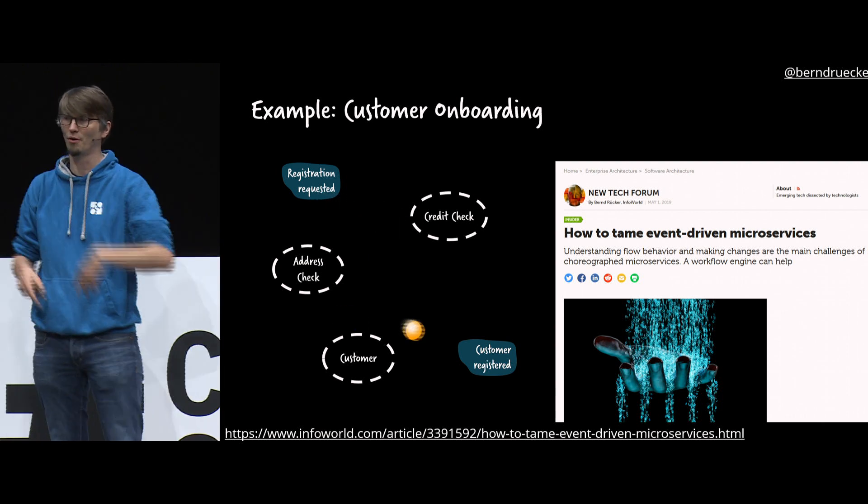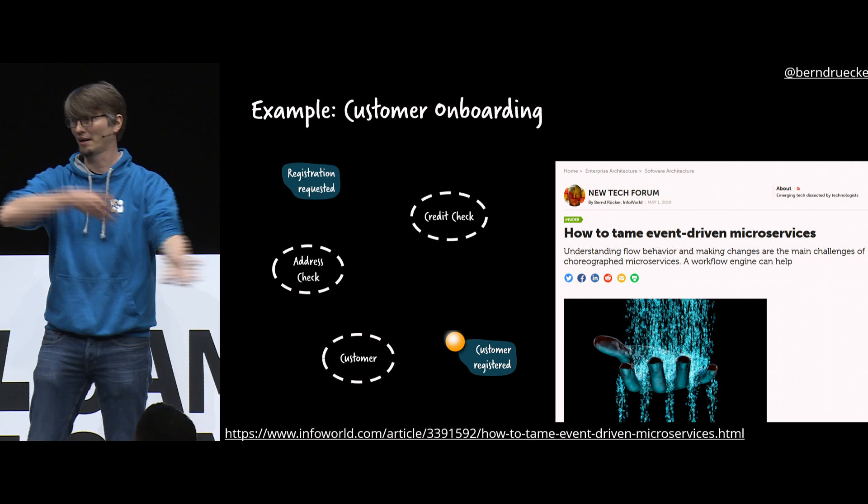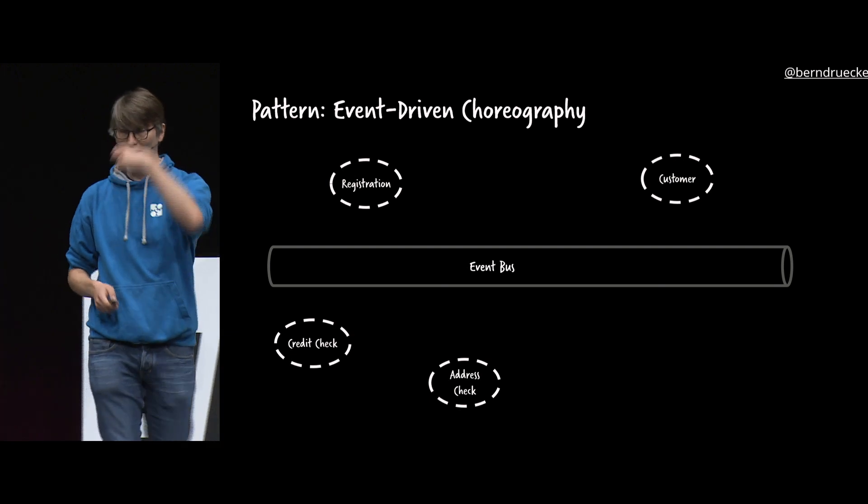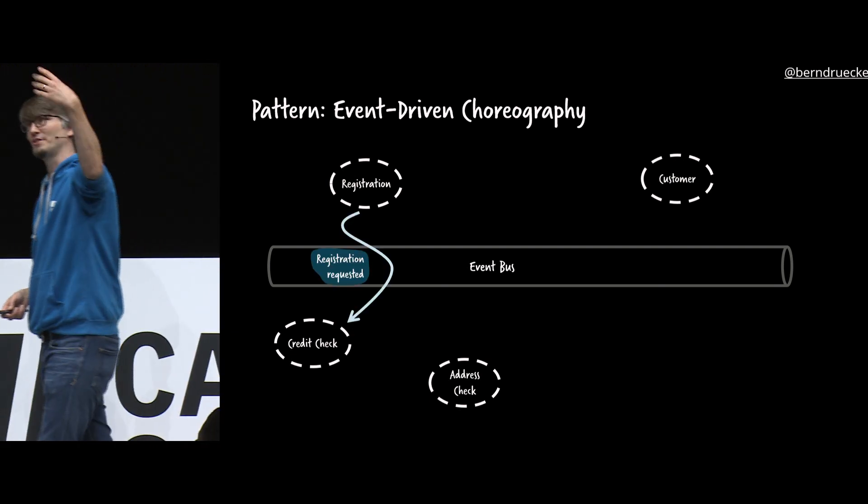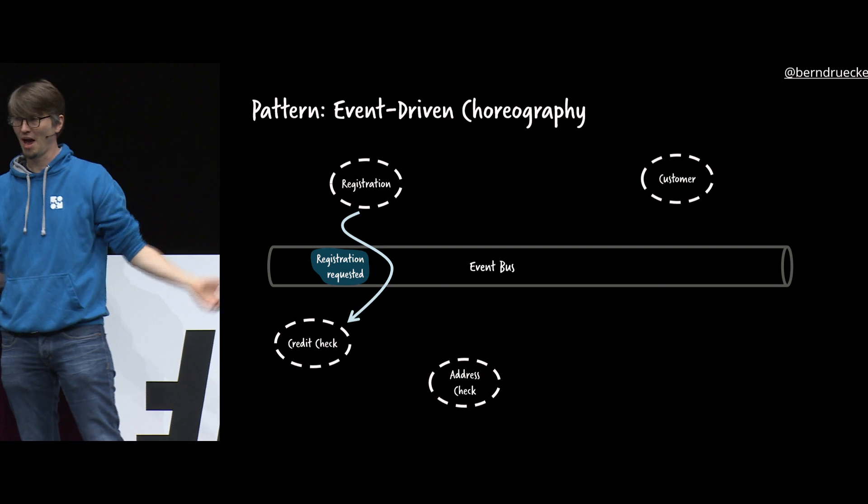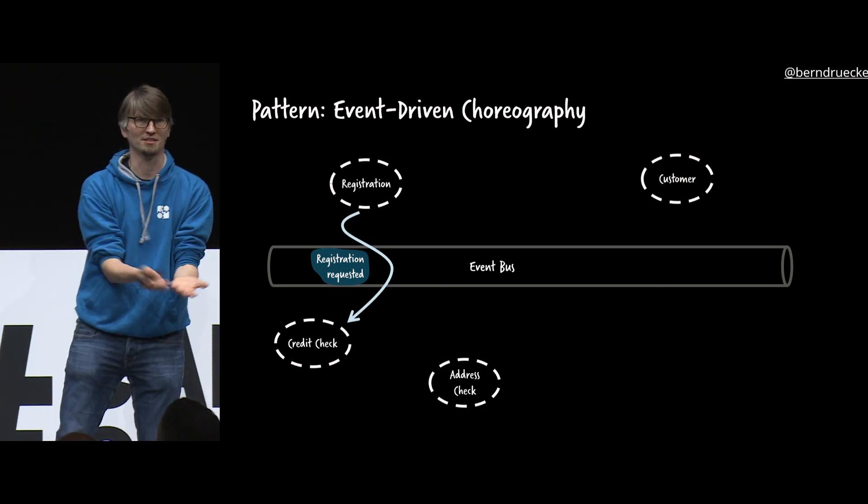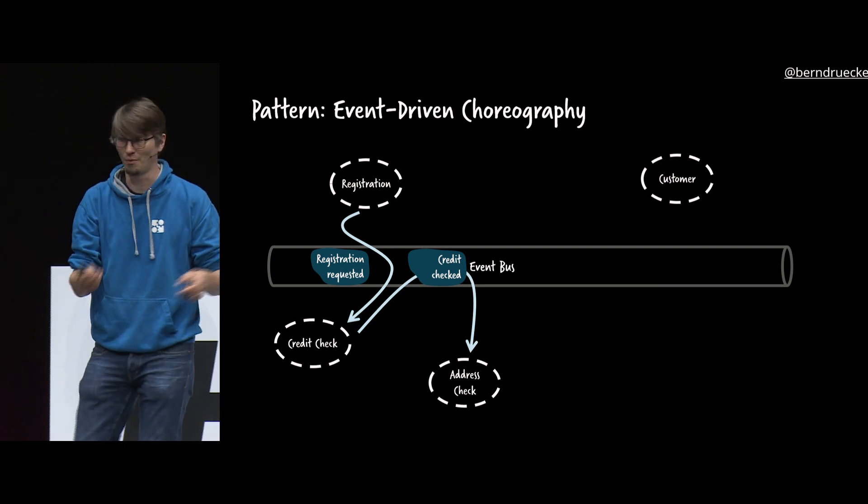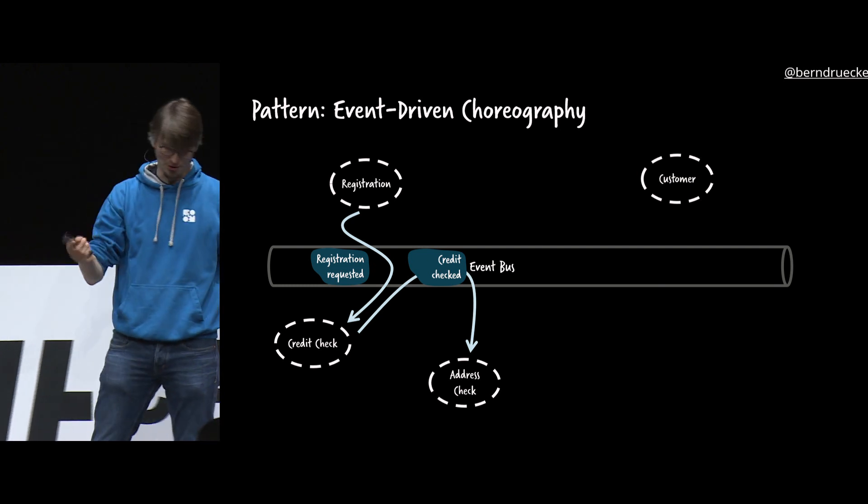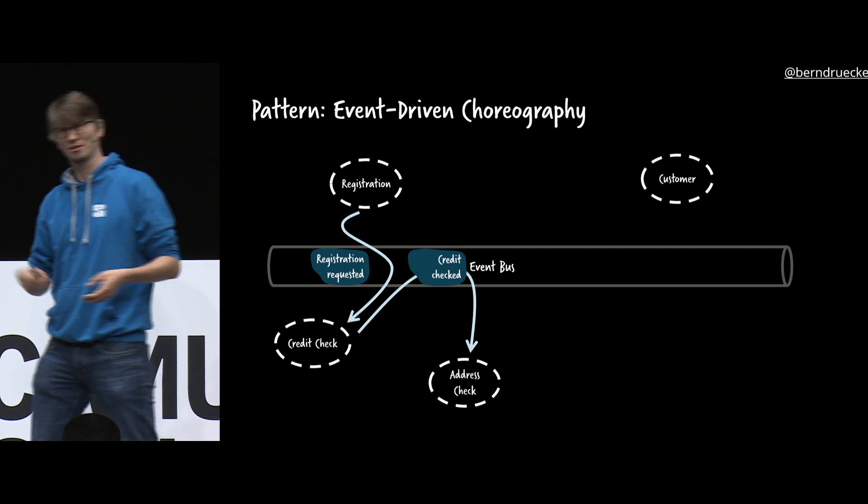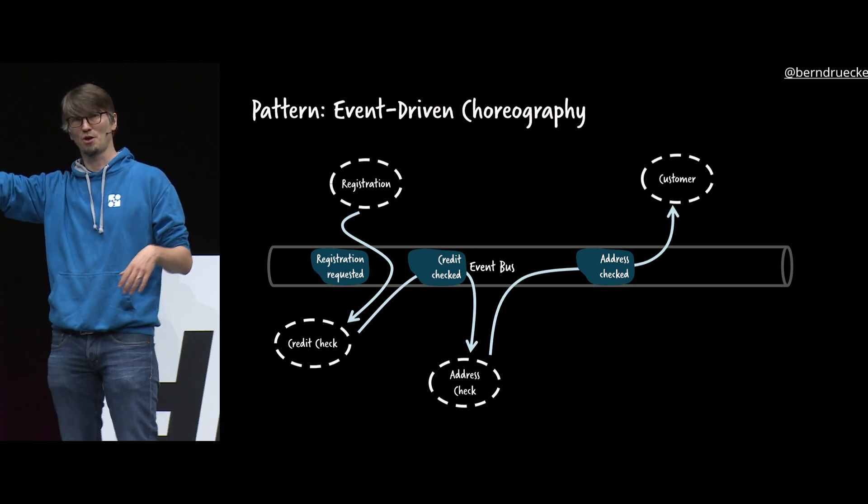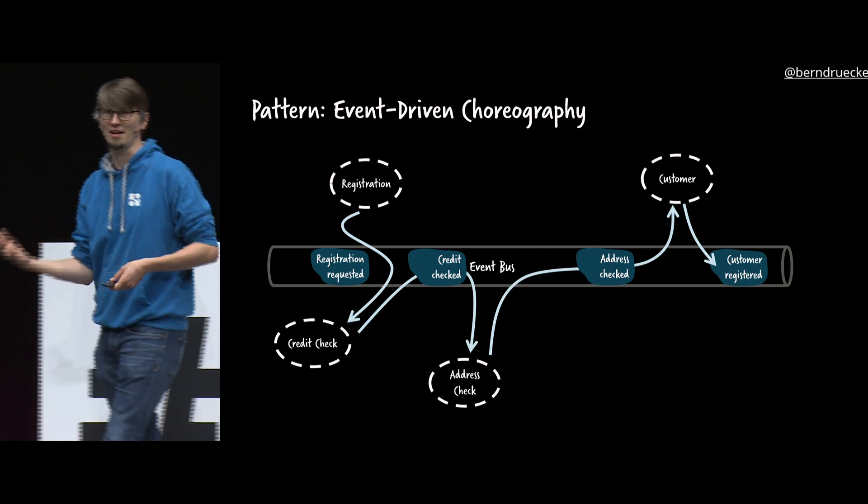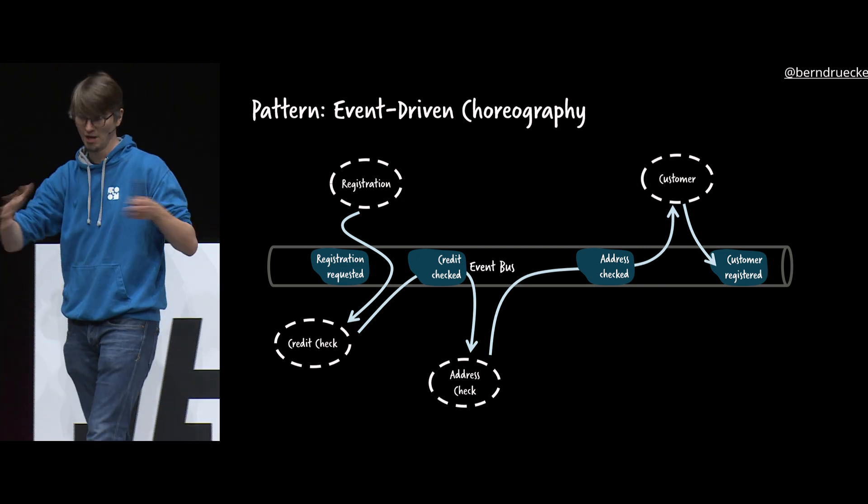So that means they have this kind of ping pong going on between a couple of services like credit check and address check and so on and so forth. How it looked was more or less a bit simplified like that. We had a registration, so customers come in. That produces an event on the bus. Hey, we want to have somebody registered. It goes to the credit service. It does its checks. That emits a new event, says, hey, there was credit check, was successful or whatever, credit checked. So address check knows, oh, then it's my turn to check the address. It emits an event. Customer knows as soon as the address is checked, I'm done and the customer is registered. That's what I call an event chain.